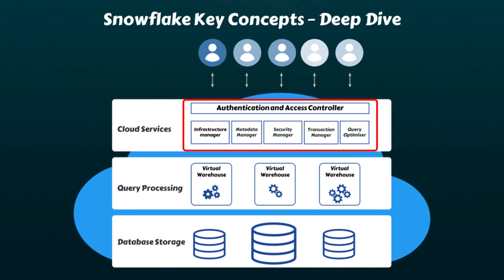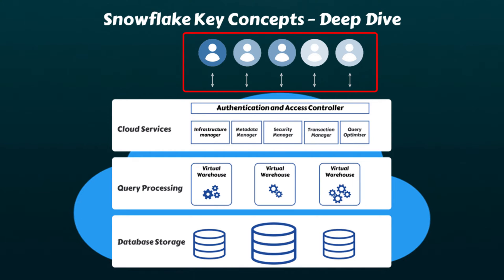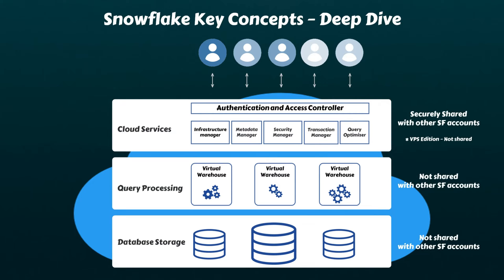The cloud services layer is a collection of services that coordinate activities across Snowflake. These services tie together all the different components of Snowflake in order to process user requests, right from authentication to delivering the results back to the user. Unlike the storage and processing layers, the cloud services layer is securely shared across all Snowflake accounts, except for users on the virtual private Snowflake edition, who receive their own dedicated cloud services layer.